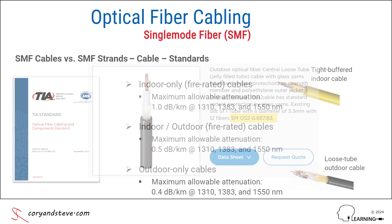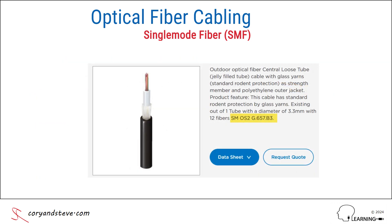Here's an example of an outdoor OS2-rated single-mode cable. Note the vendor's specification of the type of fiber strands it contains — in this case, it's G.657.B3 bend-insensitive fibers, with a minimum 5 mm bend radius.